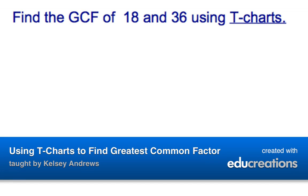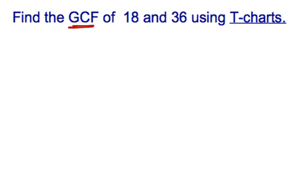Our second option for finding the GCF, the greatest common factor, or HCF, the highest common factor, is using T-charts. So we need two separate T-charts, one for the factors of 18 and one for the factors of 36.